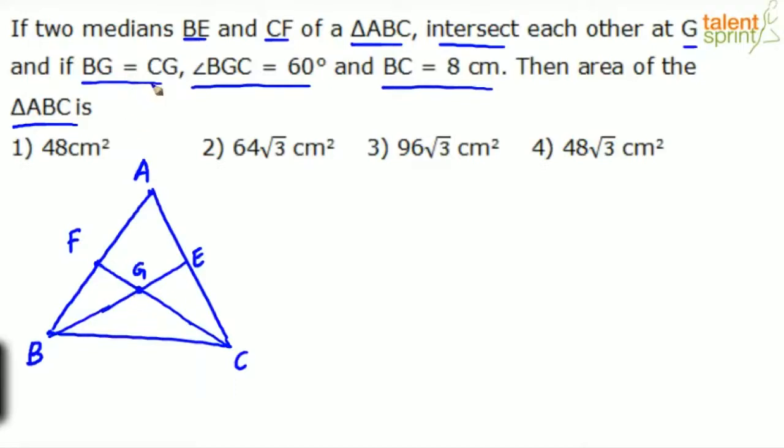Next he says BG equals CG. This is an important point - the length BG is equal to CG. So if you look at triangle BGC, BG equals CG, and angle BGC is 60 degrees. This angle is 60 degrees. And BC equals 8 centimeters. So we know a lot about this triangle BGC.